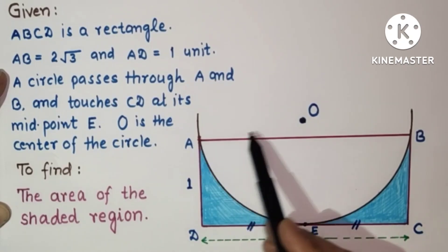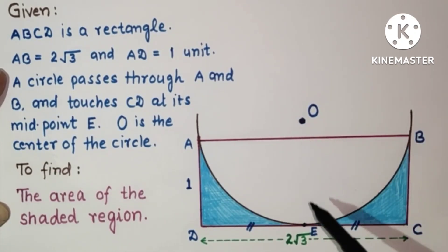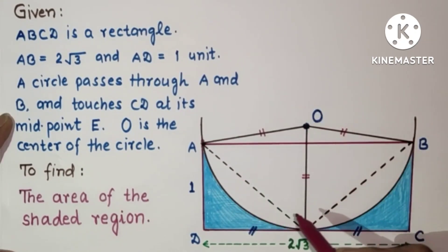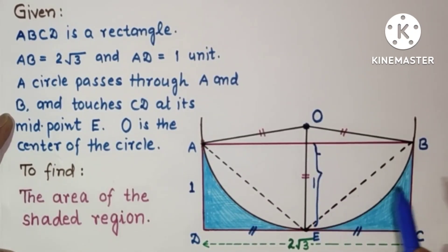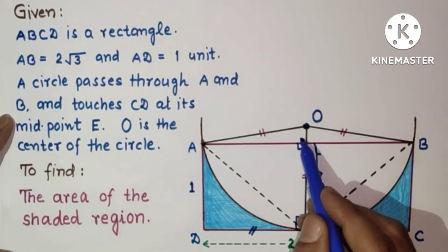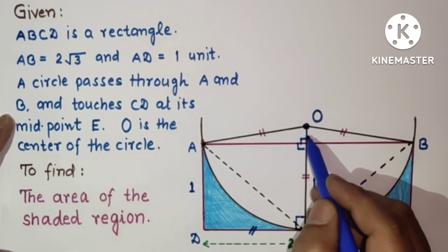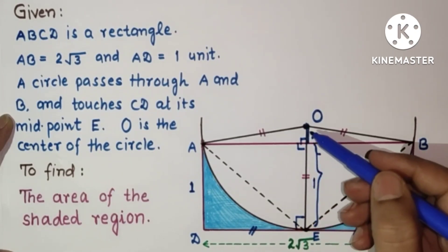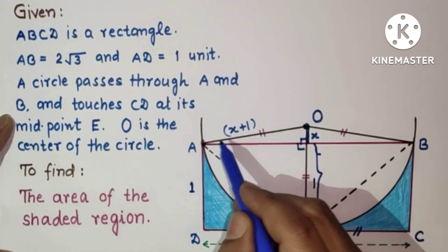To solve this, join OA and OB. O is the center of the circle, so OA, OB, and OE are all radii. AD is 1, so from the top to E it is 1. OE will be perpendicular to DC because E is the point of contact, and the radius to a tangent point is 90°. Let us suppose the remaining portion above E to O is x, so OE will be x plus 1, and OA will also be x plus 1.